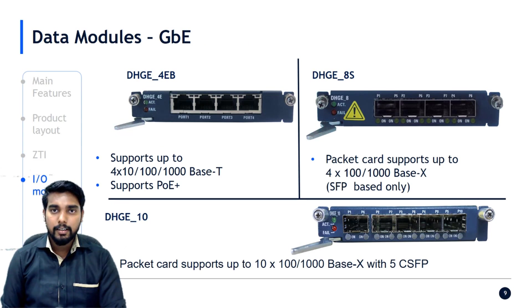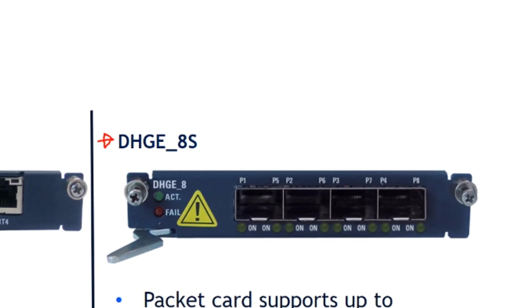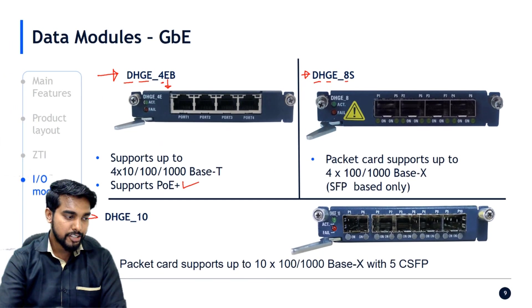Talking about the traffic slot cards supported in NPT 1022: the first card is DHGE4EB — a pure packet data card with 1 gig port rate, four ports, all electrical-based, and it supports Power over Ethernet. The next card is DHGE8, also used in the NPT family like NPT 1200. DHGE stands for data card with gig interfaces; no 'E' means optical ports; '8' means it supports eight ports.